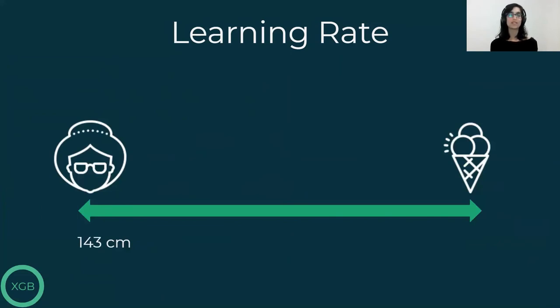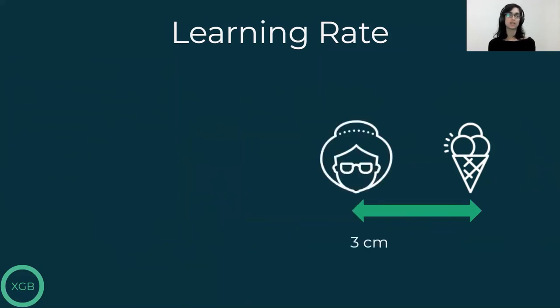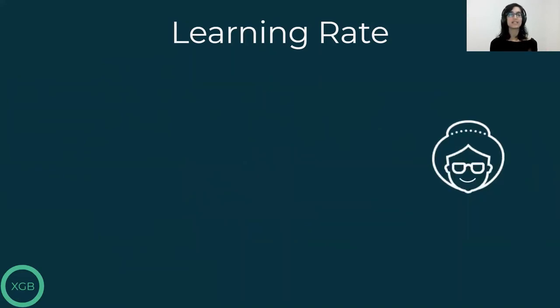For example, if there's ice cream 1 meter and 43 centimeters away from me, and my step size is 1 meter long, the closest I can get to the ice cream is 43 centimeters away after taking one step. But if my step size is 10 centimeters long, I can take 14 steps and get 3 centimeters away from the ice cream. And of course, if my step size is 1 centimeter long, then I can get exactly to where the ice cream is and eat all of it.